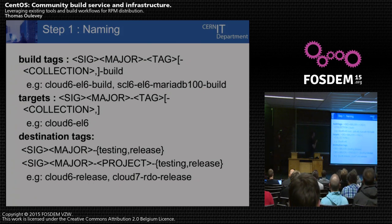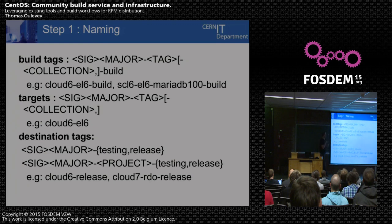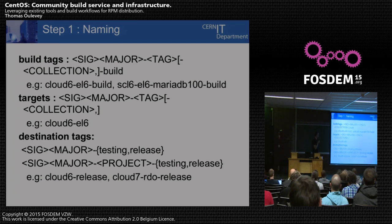We needed some naming conventions to make sure things don't end up in a mess, especially with different SIGs. For Fedora, they have fewer targets because they don't have to manage software collections yet. We came up with a way to define build tags, targets, and destinations that make sense. This was discussed on the CentOS development mailing list and we agreed on this naming scheme. So far, we haven't had any issues with it.